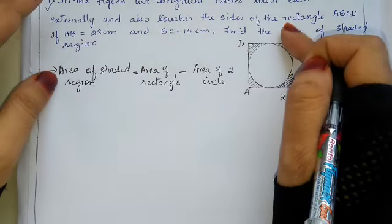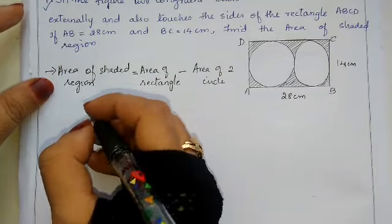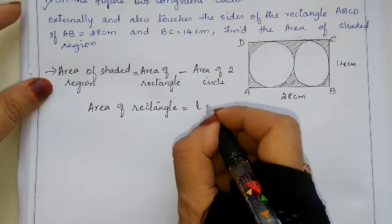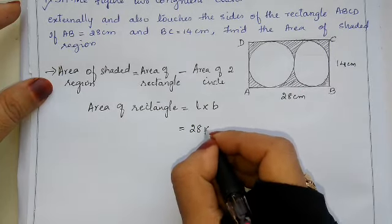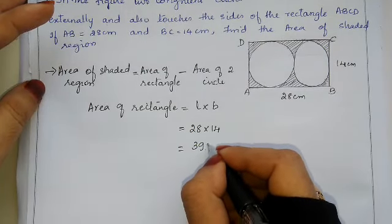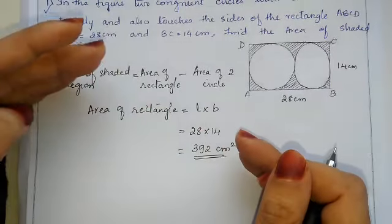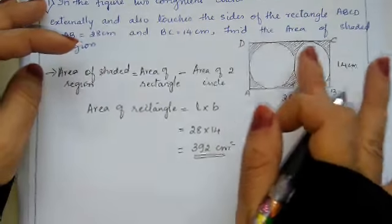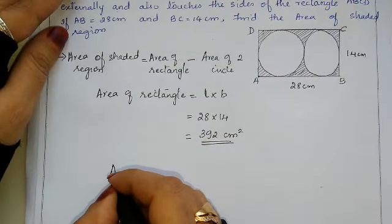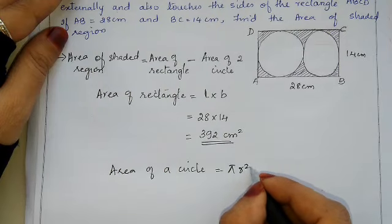First, let us find the area of the rectangle. Area of rectangle equals length into breadth, which is 28 into 14, giving 392 cm square. Now we need to find the area of the two circles.